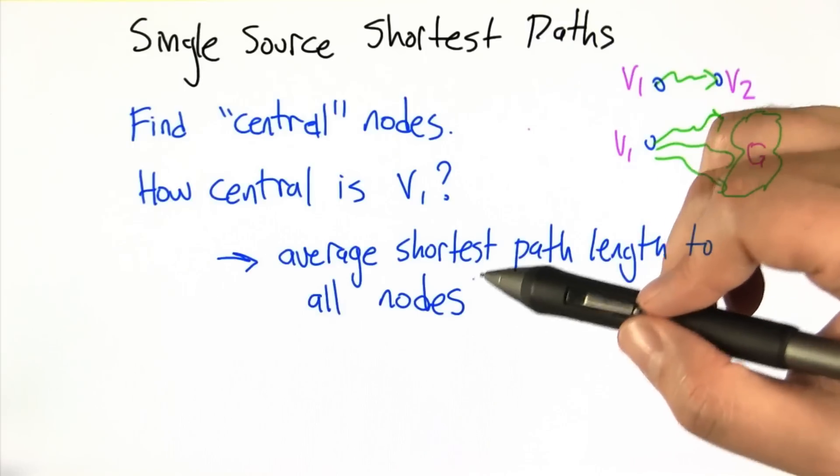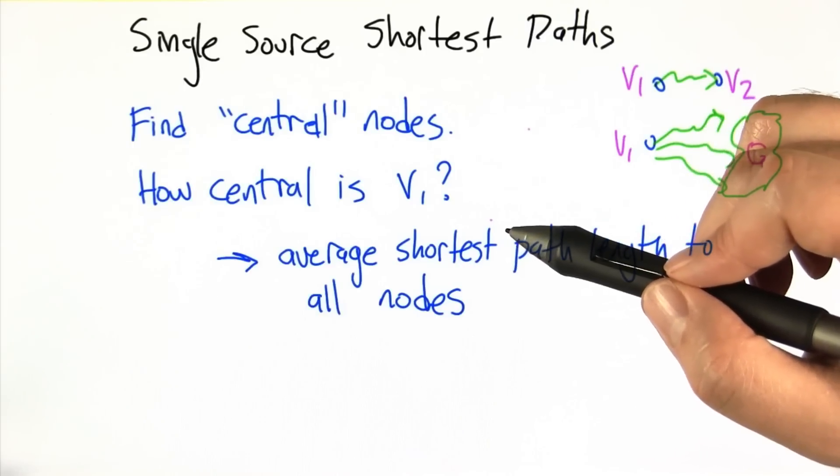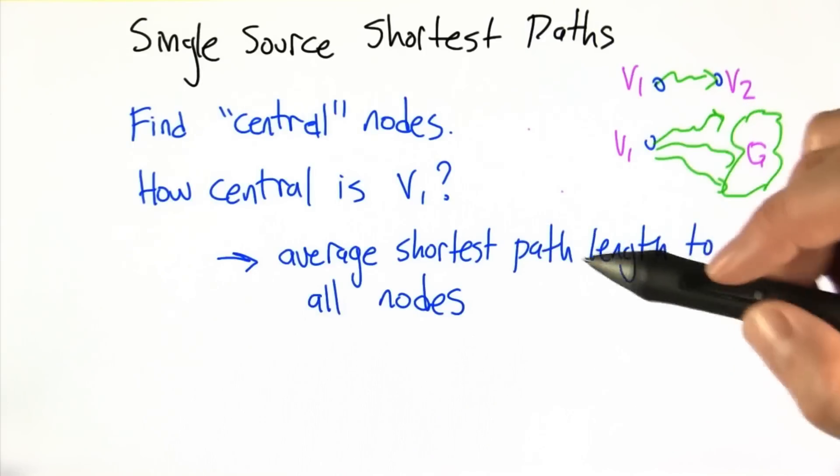So to find this quantity, we're going to need to calculate the shortest path length from V1 to all the other nodes.